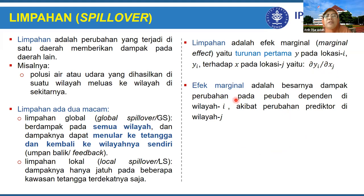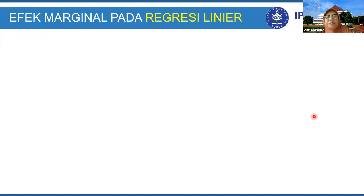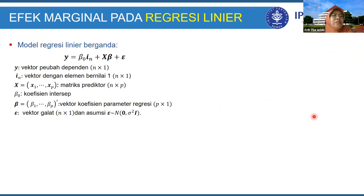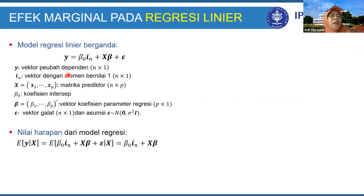Efek marginal adalah besarnya dampak perubahan pada peubah dependen Y di wilayah i akibat perubahan prediktor X di wilayah j. Perhatikan model regresi linear secara umum dalam bentuk matriks: Y sama dengan beta_0 I_N ditambah X beta ditambah epsilon. Pertama kita tentukan nilai harapan Y dengan syarat X. X ditetapkan nilai-nya, sehingga ketika X tertentu nilai harapan Y given X kita masukkan. Nilai harapan galat adalah 0, sehingga nilai harapan ini sama dengan beta_0 I_N ditambah X beta.